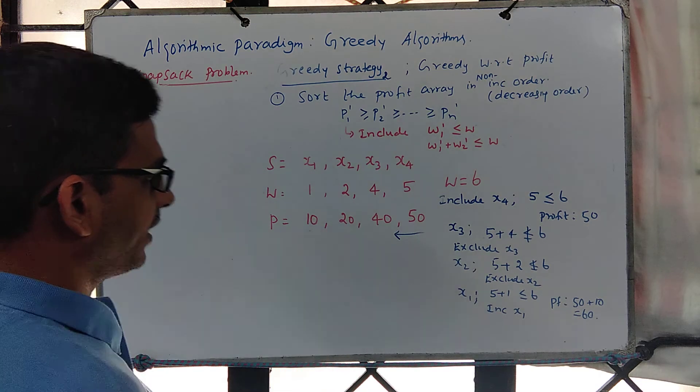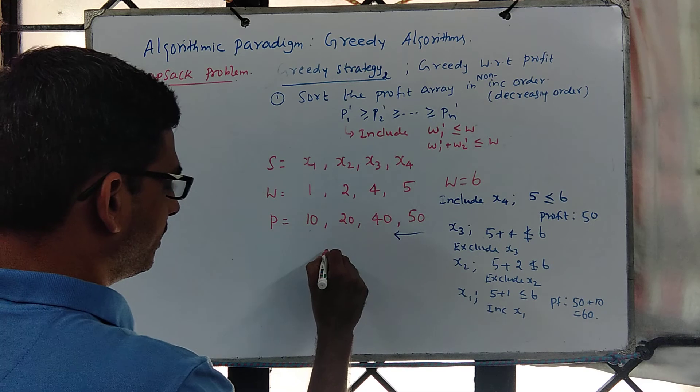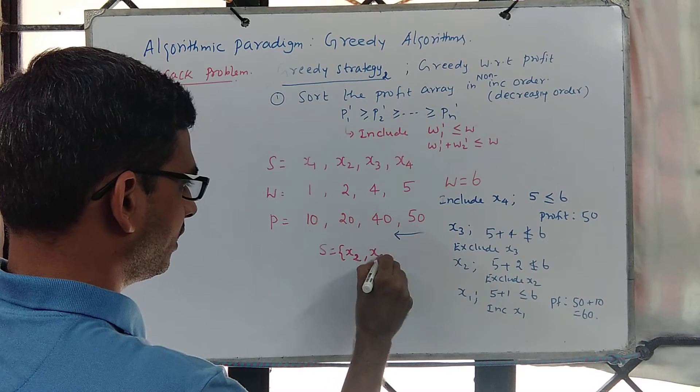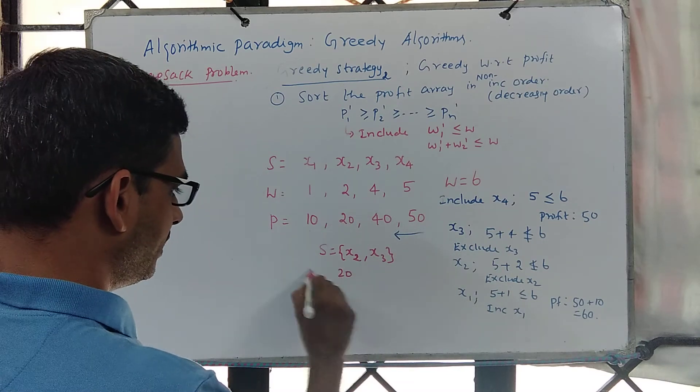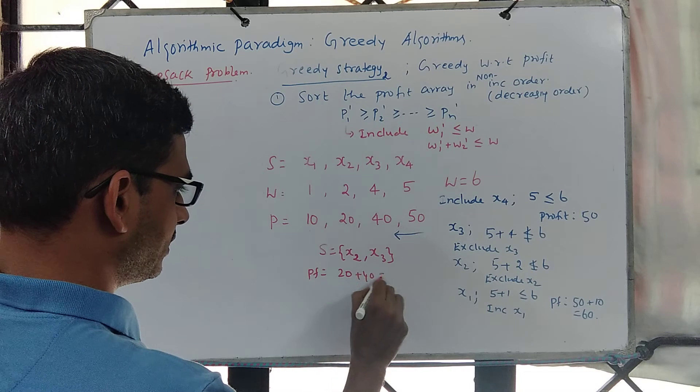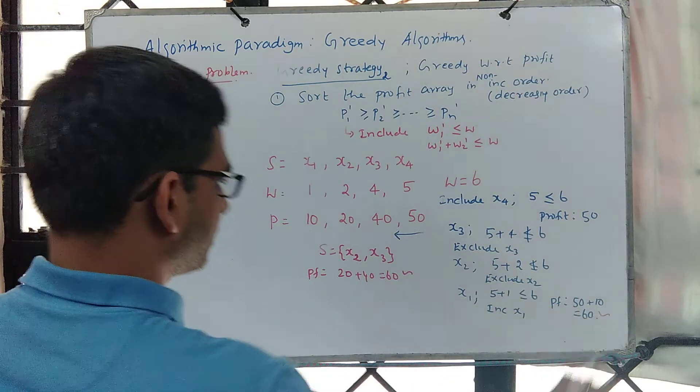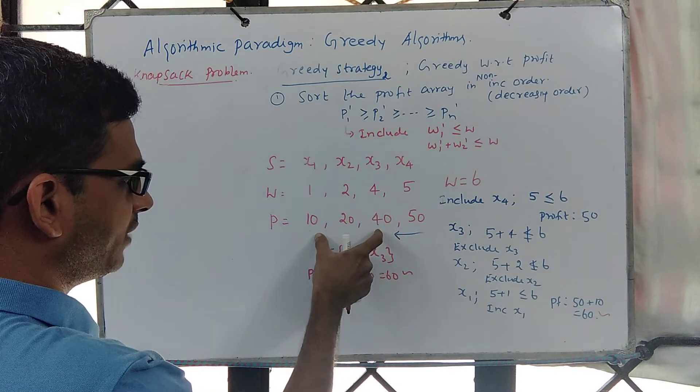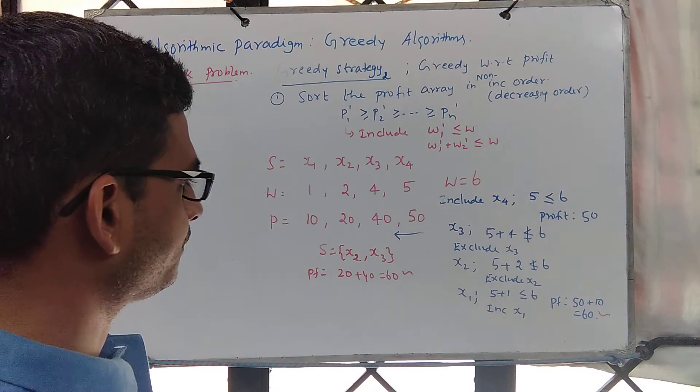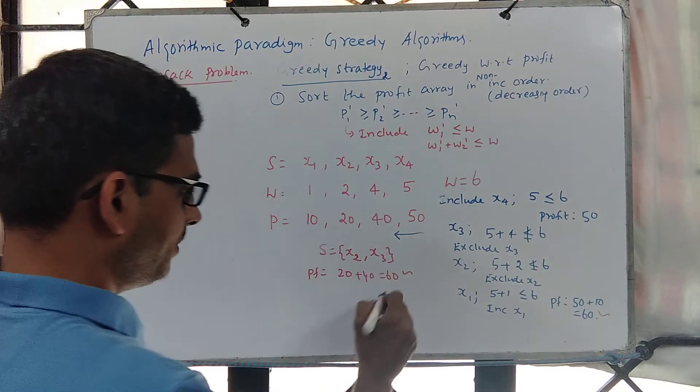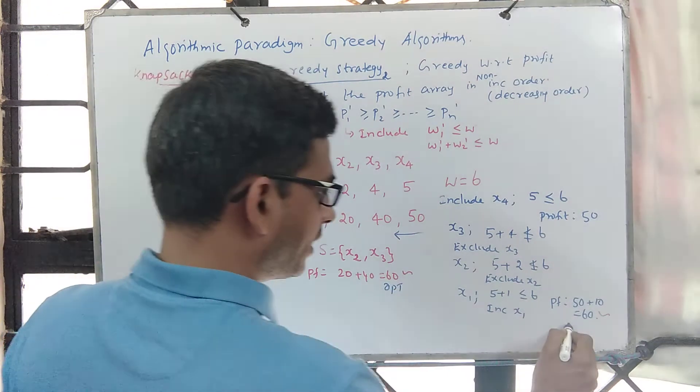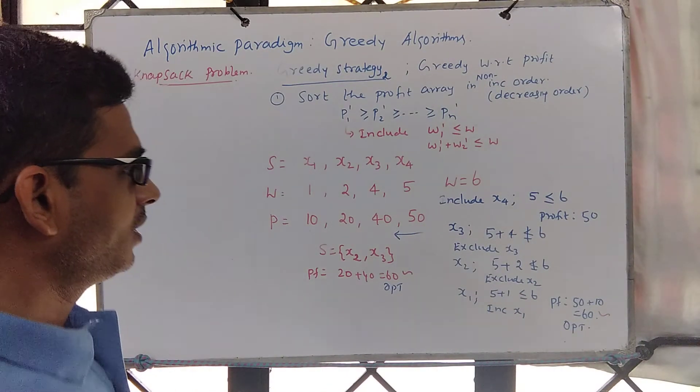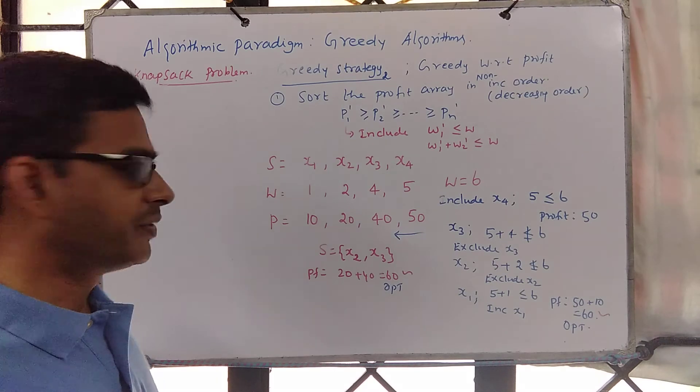Now look at any other solutions. For example, if my s is say x2 comma x3, the profit earned is 20 plus 40, which is 60. This is also matching. If you look at x3 and x1, the profit is only 50, so that is not optimum. So this is optimal, and our algorithm is also giving optimum solution, or our strategy is giving optimum solution. So intuitively we think the strategy works, right?